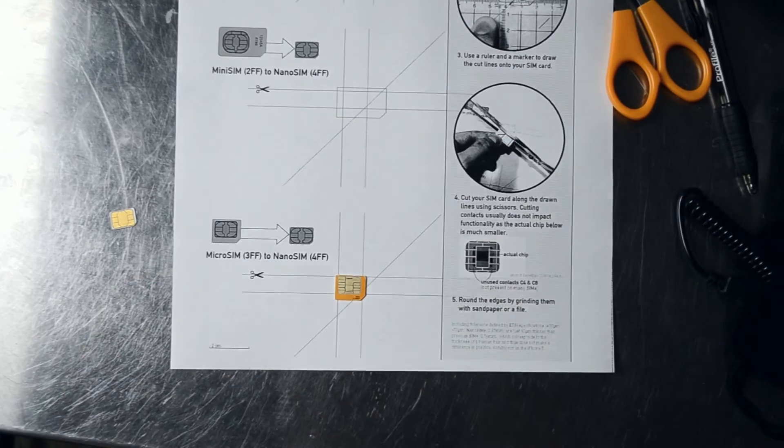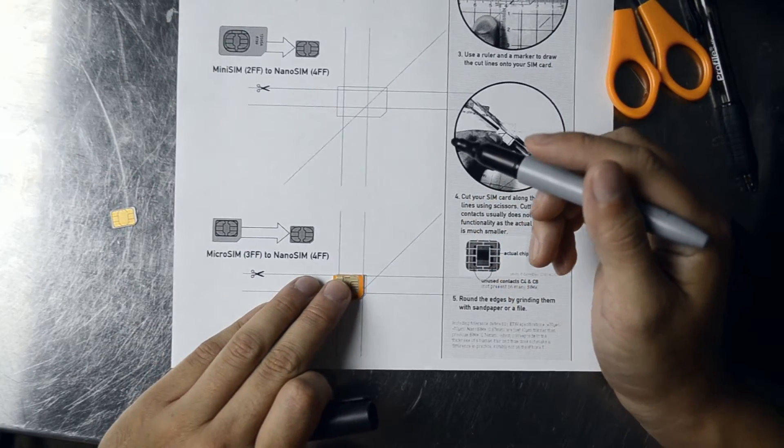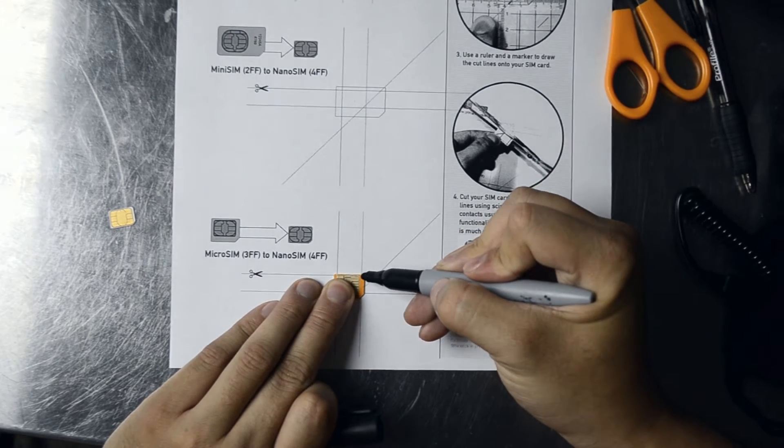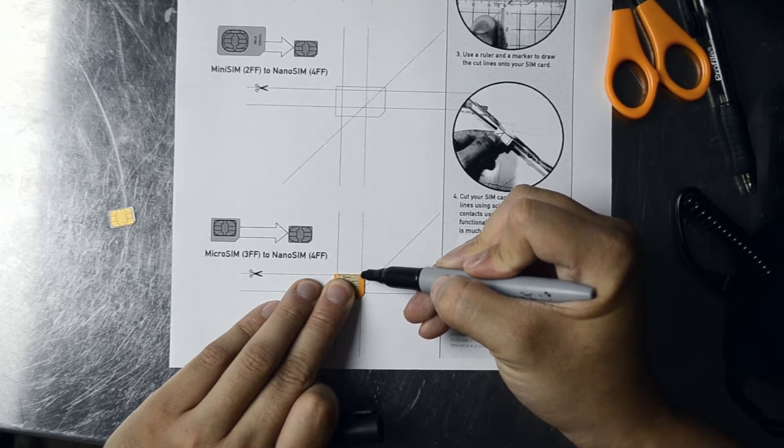You can see by these lines how much we need to cut off. Let me go ahead and align it. So, just print this out at 100%, and you should be good to go.